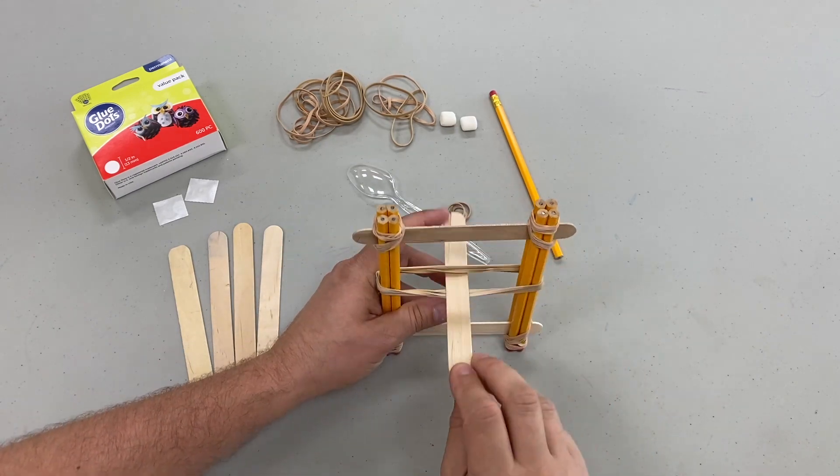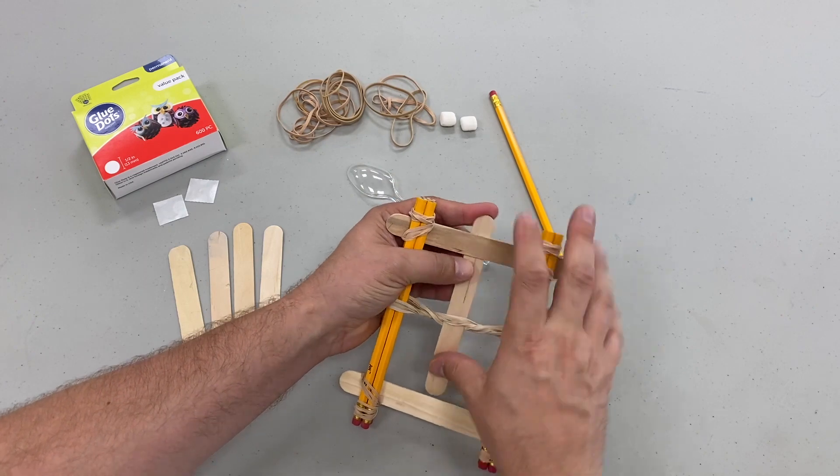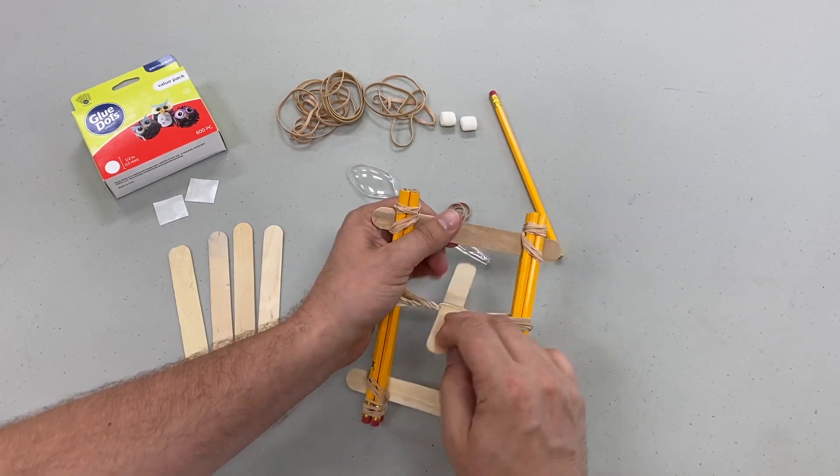Next, take another craft stick and put it in between your rubber bands, then twist it around to build up that elastic energy.